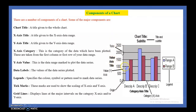We can label data — data labels provide a description showing how much value each data item has. Legends are also a component. The legend shows which color is used to represent which data series in the chart. Tick marks and grid lines are also components. These are the different components of the chart.